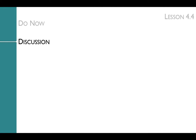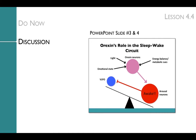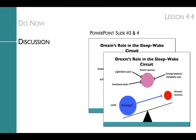The discussion starts with a review of orexin's role in the sleep-wake circuit, specifically that orexin neurons are stimulated by light and other cues that keep us awake. Once stimulated, they stimulate the arousal neurons, which inhibit the VLPO neurons, and the effect is we stay awake. When orexin neurons are switched off, they no longer stimulate the arousal neurons. When arousal neurons are not stimulated, they cannot inhibit the VLPO. So the VLPO becomes active, it inhibits the arousal neurons, and we end up falling asleep.